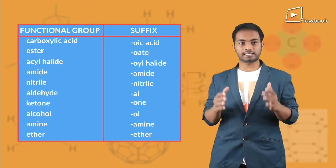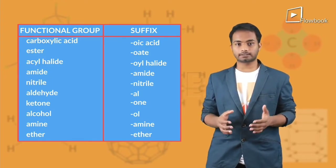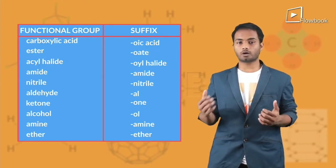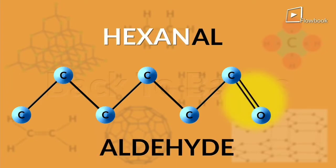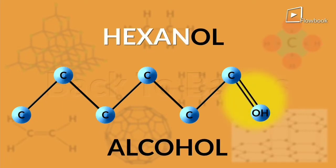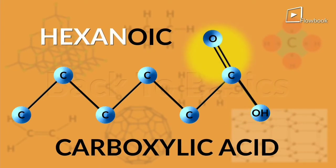So what if there is a functional group? Well, then you have to take a look at the list which tells us what names to add to the suffixes of the compound. For example, let's say I have a six-carbon compound — the prefix is hex. If it has an aldehyde, I call it hexanal; if it has an alcohol, I call it hexanol; and if it has a carboxylic acid, I call it hexanoic acid.